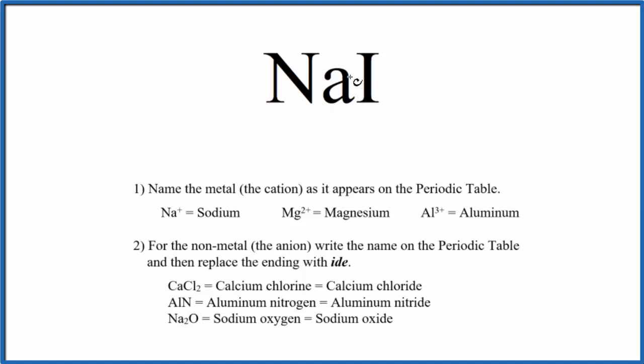This is also called a binary ionic compound. We have just two different types of elements. So when we have a binary ionic compound, we can use these rules to write the name.